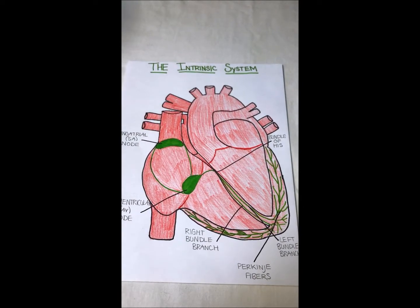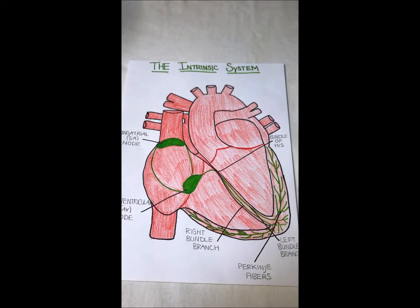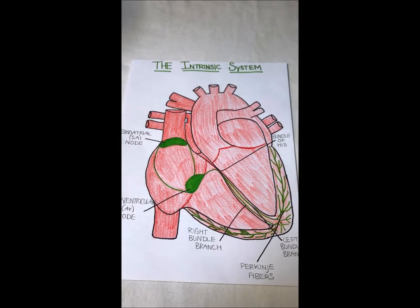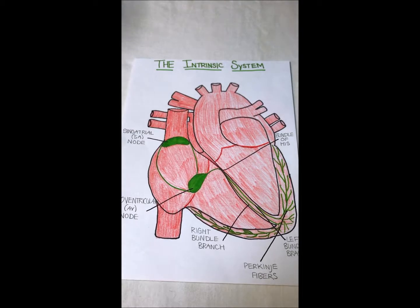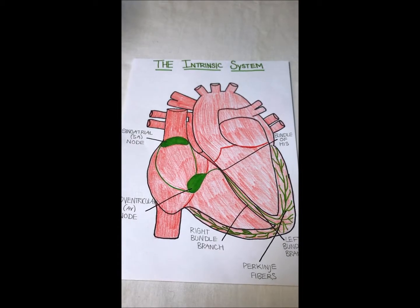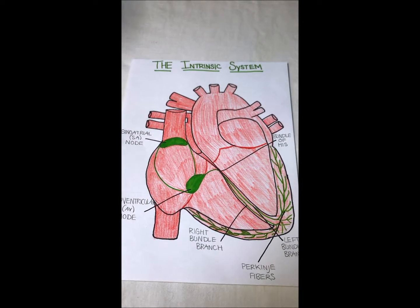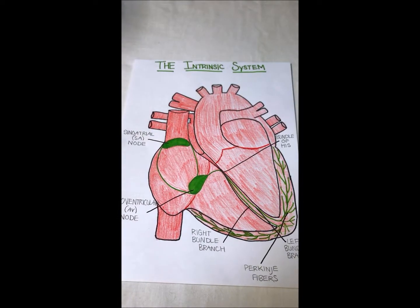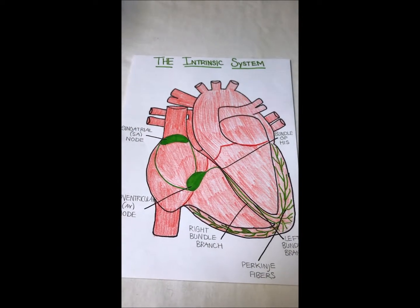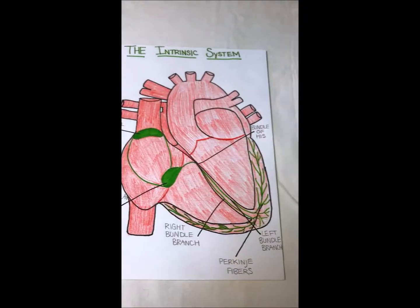Now on to the intrinsic system. This system tells your heart to beat and sets the basic rhythm. It all starts with the sinoatrial node, or SA node. The SA node is your heart's pacemaker — it initiates atrial contractions. From there, the impulse moves to the atrioventricular node, or AV node. Here there is a time delay: the AV node catches the impulse, holds onto it for a moment, and then sends it to the bundle of His.